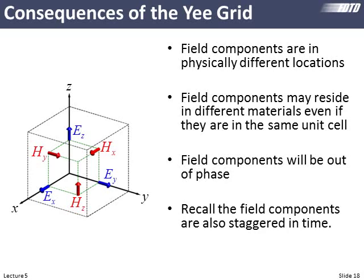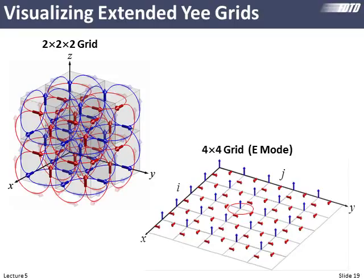Here I'm visualizing extended lattices showing how E fields wrap around H fields and H fields wrap around E fields. Here's a 4×4 two-dimensional grid in the E mode — we can see an electric field in the middle immediately surrounded by all the magnetic fields needed to calculate the curl to update the E field at the center. A little easier to visualize in two dimensions, but the same thing is happening in three dimensions.